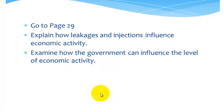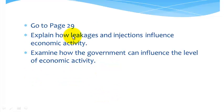Now again, I'd like you to take pause. Go to page 29. There's an extended response on that page. And there's these two things I want you to look at. I've basically been talking about how leakages and injections influence economic activity. But this is a bit of an extension for you. Examine how the government can influence the level of economic activity. And you can put that in historical context in relation to the last global financial crisis.